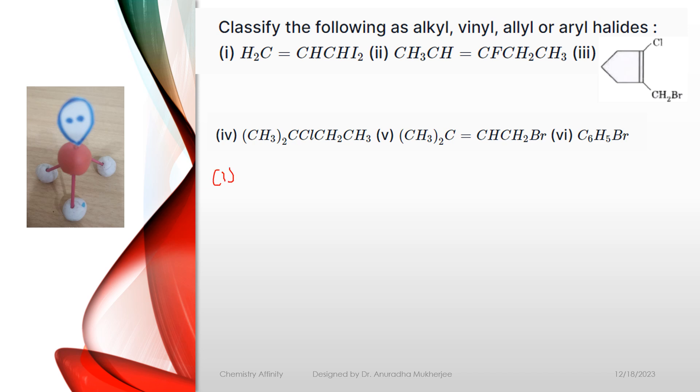Write down the first compound: this is CH2 double bond CH, CHI2. Now, this is the first carbon which is Sp2, second carbon is also Sp2, third carbon is Sp3 and iodine is connected with Sp3 carbon, so it is an allyl group, so that means it is an allyl iodide.